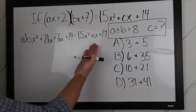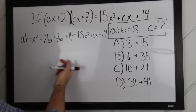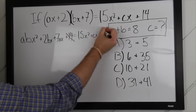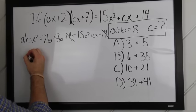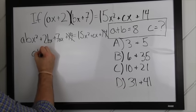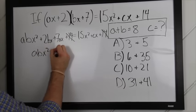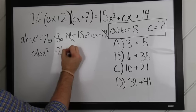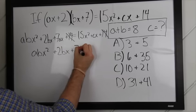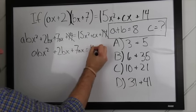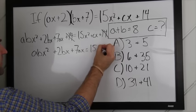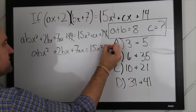So now that we have these two looking fairly similar in similar forms, we can see that right away our 14s are going to cancel out. So we're left with abx squared plus 2bx plus 7ax equals 15x squared plus cx.